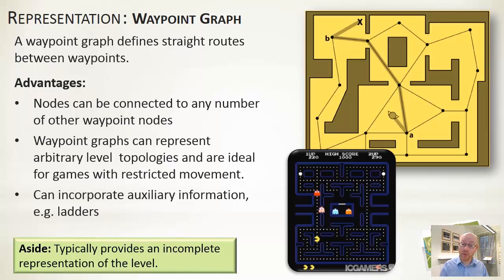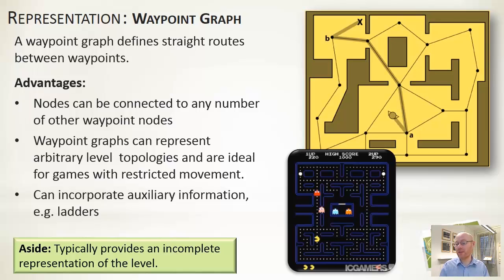Waypoints are very flexible — you can have, for example, a waypoint at the bottom of a ladder and another at the top. However, they are an incomplete representation of the level because we're not modelling the whole world. A character trying to reach a destination must first find its closest waypoint, navigate to it, run the pathfinder, follow the waypoints, and then work out how to reach the actual destination from the final waypoint — adding additional complexity.